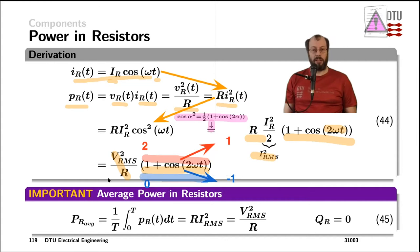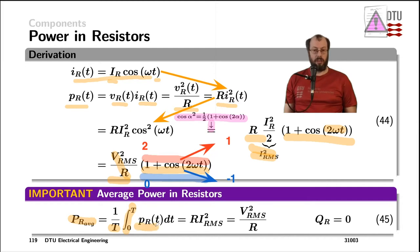Ultimately, that means the instantaneous power in a resistor alternates around the RMS voltage squared divided by the resistance, or the RMS current squared times the resistance, and can never go negative. Therefore, the average power in a resistor — using the definition of average, dividing by the period time T and integrating over a whole period from zero to T — gives us the equations outside the brackets, and all of this power is real power while the imaginary power is zero.